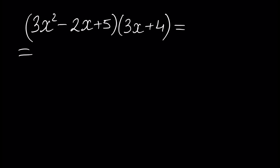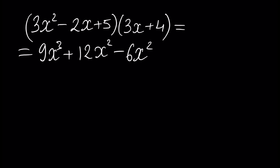The result will be: 3x squared times 3x is 9x cubed, plus 3 times 4 is 12x squared. Then minus 2x times 3x is minus 6x squared, minus 2x times 4 is minus 8x. Then plus 5 times 3x is plus 15x, and plus 5 times 4 is plus 20.